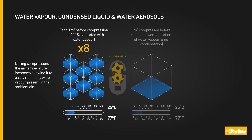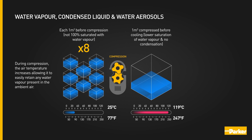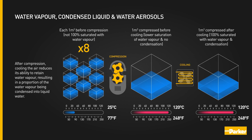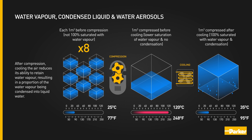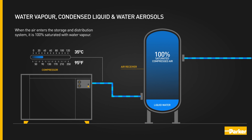During compression, the air temperature increases, allowing it to easily retain any water vapour present in the ambient air. After compression, cooling the compressed air reduces its ability to retain water vapour, resulting in a proportion of the water vapour being condensed into liquid water. When the air enters the storage and distribution system, it is 100% saturated with water vapour.